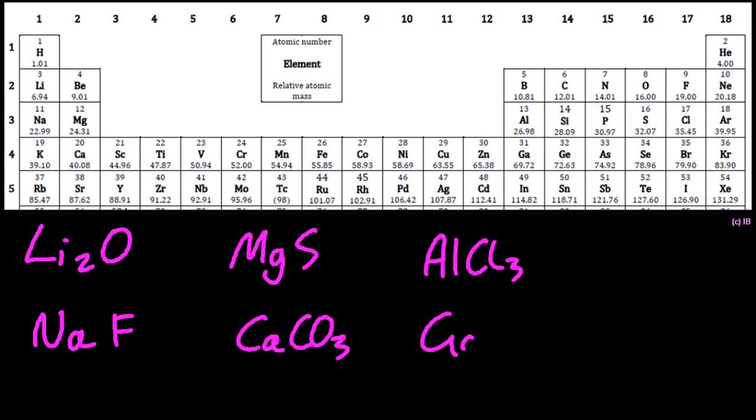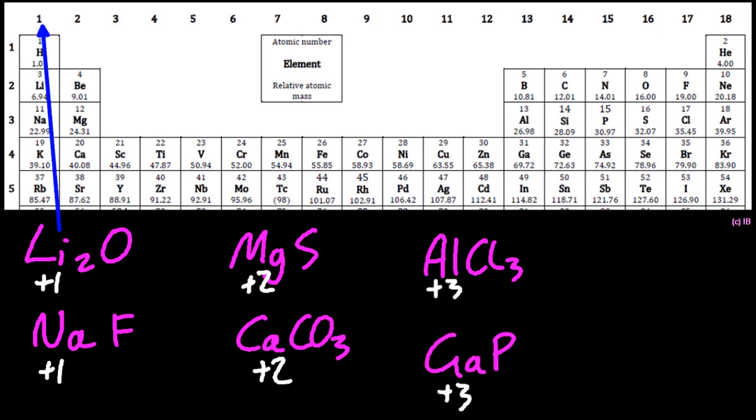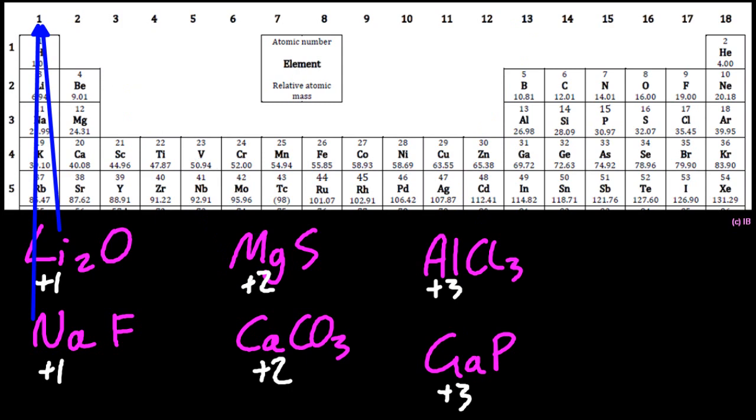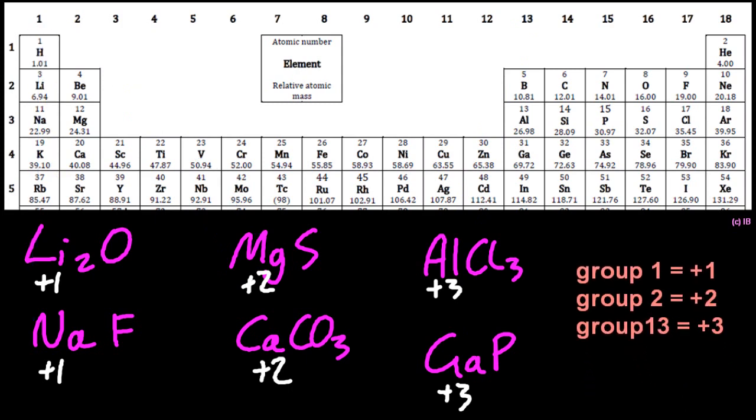Nearly done. So those are group one, two, and 13 metals. And there's a definite pattern there. Group one is plus one. Group two plus two. Group 13 plus three. Those are the oxidation states in a compound. Of course, if they were on their own, it would be zero. Because all elements are zero.